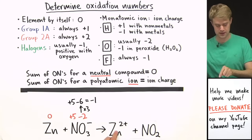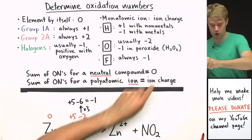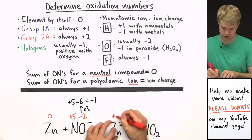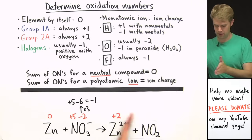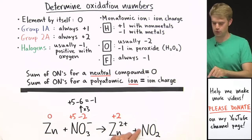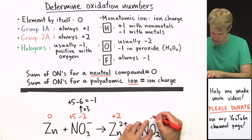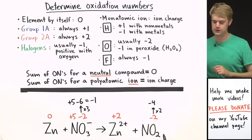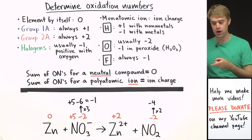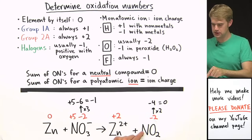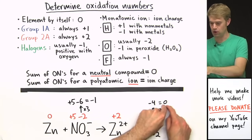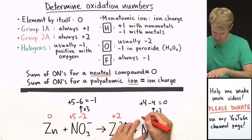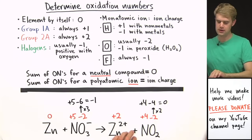Over on the right side, zinc has become a monatomic ion with a charge of two plus, so its oxidation number is the same as its ionic charge — plus two. For nitrogen here in NO₂, oxygen is minus two and we have two oxygens, so minus two times two gives us minus four. NO₂ is a neutral compound, so nitrogen's oxidation number has to add to zero with minus four, meaning nitrogen is plus four: plus four minus four equals zero.